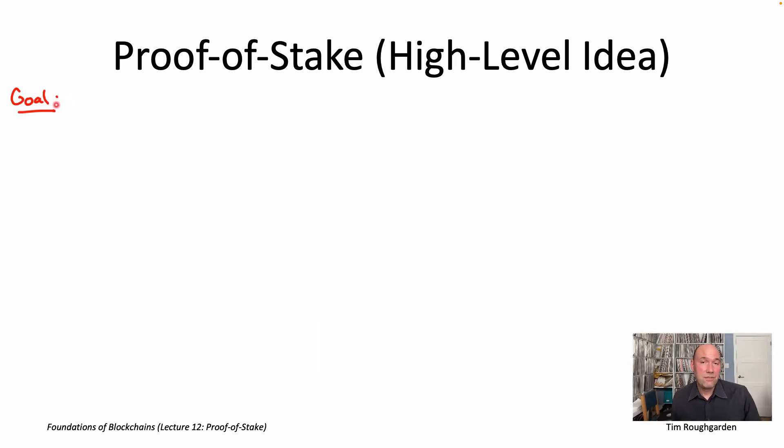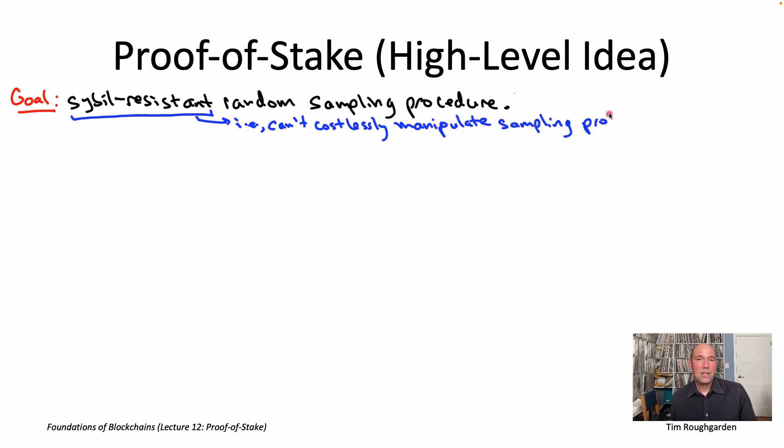The goal, remember from last video, is to have some way of doing Sybil-resistant random sampling. So we'd like to randomly sample a node running the protocol in a way that no node can manipulate the probability with which it's selected, or at least no node can costlessly manipulate the probability with which it's selected. We saw one example of a Sybil-resistant random sampling procedure back in lecture number nine when we talked about proof of work. Basically there, nodes commit computational resources to running the protocol, and here we're talking about a different approach where nodes instead will commit directly economic resources.